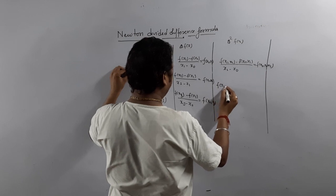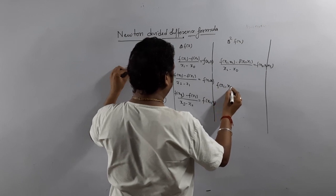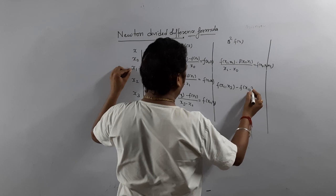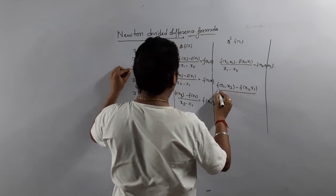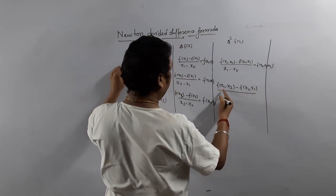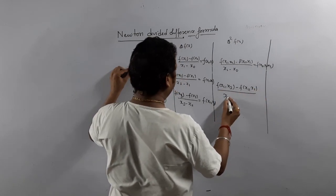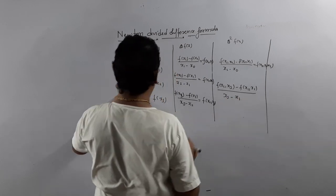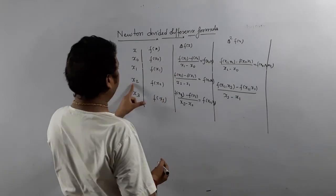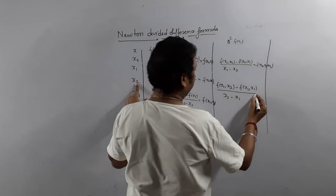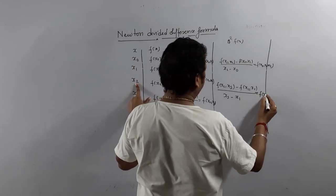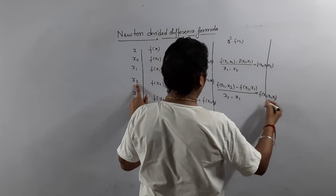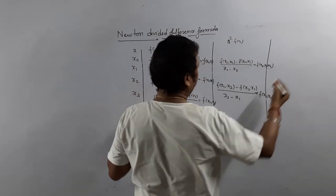For the second divided difference: f[x2, x3] minus f[x1, x2] divided by x3 minus x1, because we are using x1, x2, x3. We leave x2 in the denominator and it is denoted by f[x1, x2, x3] — three values are used.